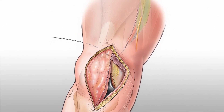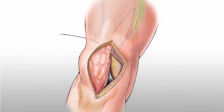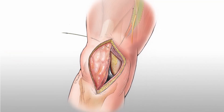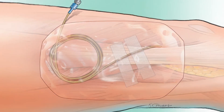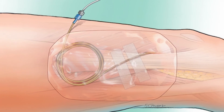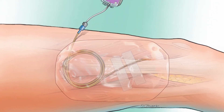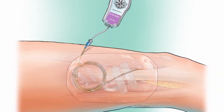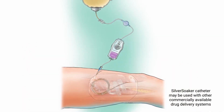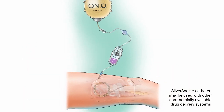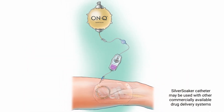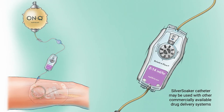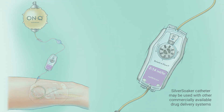Once the catheter is placed, the retractors are removed. The wound is irrigated and closed in the standard fashion of choice. After wound closure, approximately 3 to 4 cm of the catheter is coiled and secured with stereostrips and a tegaderm. Once the catheter is secured, connect it to the ON-Q or AMBIT pump. The flow rate is initially set and may be adjusted to the physician's preference.